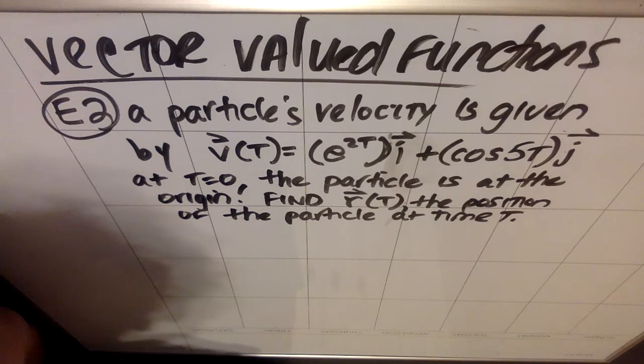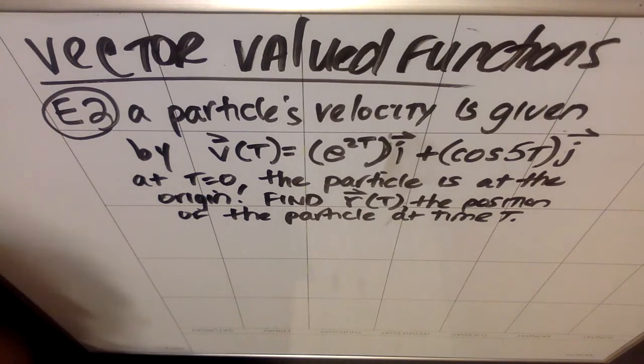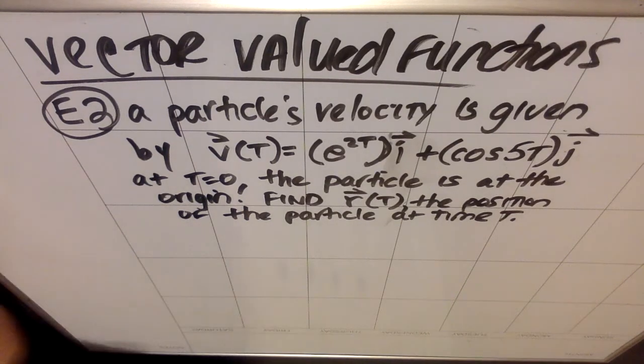At t equals zero, the particle is at the origin. Find r(t), the position of the particle at time t. All right, so in order to get from velocity to position, we're going to have to integrate.